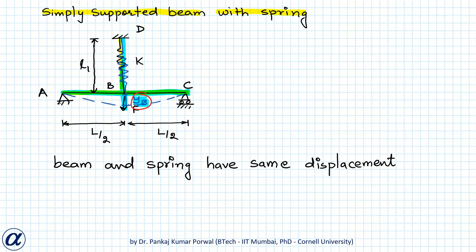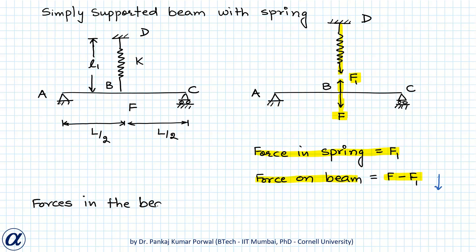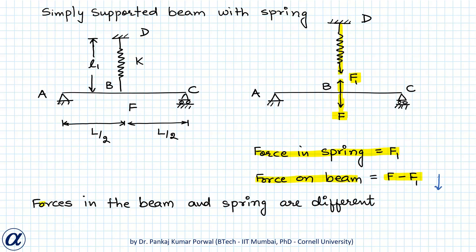Now if I draw the free body diagram at point B for the beam and spring, note that the force in the spring is F1. On the beam, we will have F1 force in the upward direction and there is a force F in the downward direction. So the net force on the beam will be F minus F1 in the downward direction, and the force in the spring will be F1. So the forces in the beam and spring are different, while their displacement is the same.